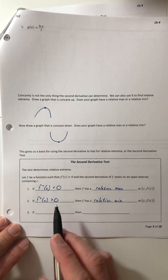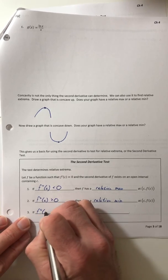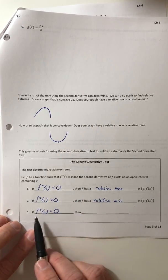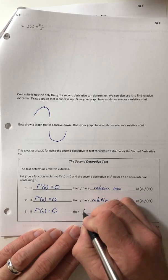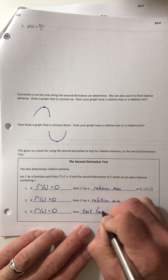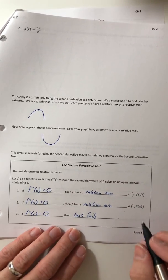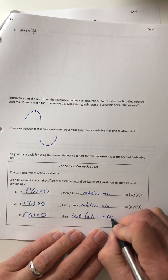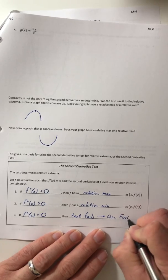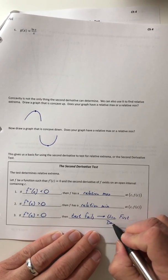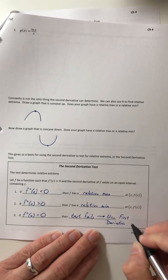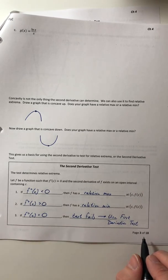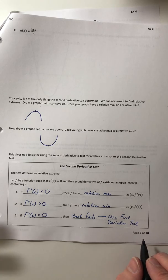So now there's a third case, and that's when it comes out as zero. So you plug that critical number into the second derivative, and it came out as zero, then the test fails. So it does not tell you anything. It doesn't tell you if it's a relative max or relative min. So if it fails, you're going to use the first derivative test. Don't just say you don't know anything. Yeah, you do, because remember, there's two tests, and so if one of them fails, then you've got to go default to the other one.